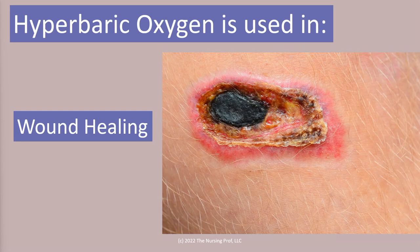Hyperbaric oxygen is also used in wound healing. If we have wounds — especially one with a necrotic core — we're not getting a lot of oxygen to that area, which is obviously why it's necrotic. So if we increase the amount of oxygen in the bloodstream using hyperbaric oxygen, we're going to be able to get more oxygen to the wound and it will heal better. You may have even heard of athletes using hyperbaric oxygen to help them recover faster from injuries.